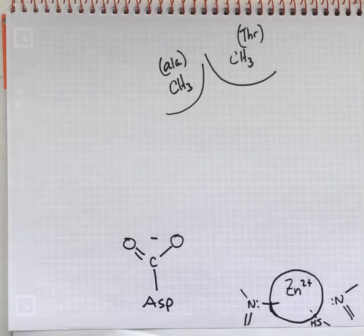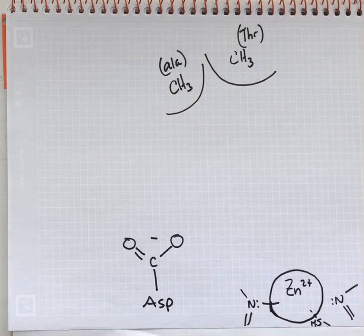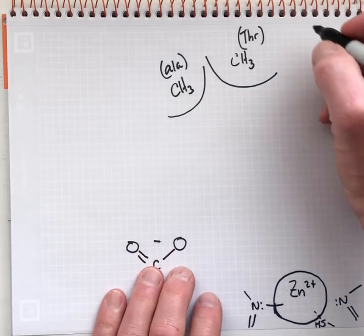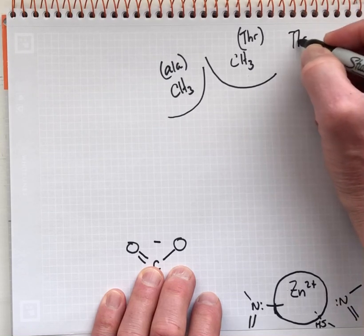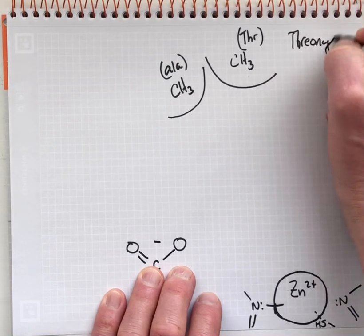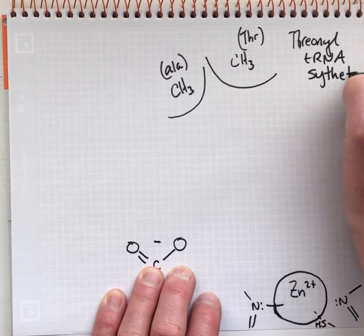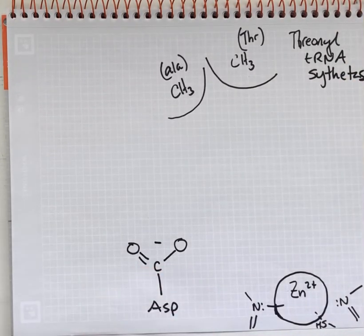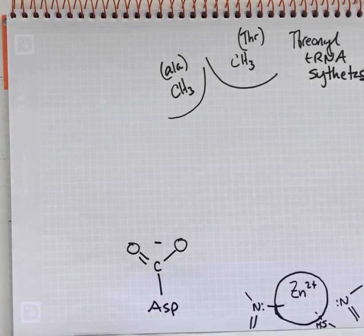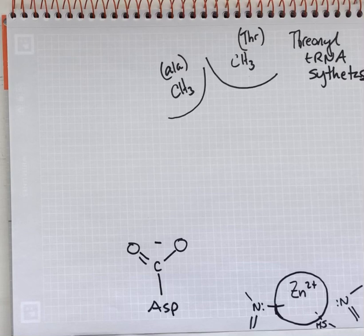After watching this video, you should have an understanding for how the aminoacyl tRNA synthetase — threonyl-tRNA synthetase — how this enzyme is able to select for its cognate amino acid, which is threonine. I've drawn some of the features of the specificity pocket for threonyl-tRNA synthetase.